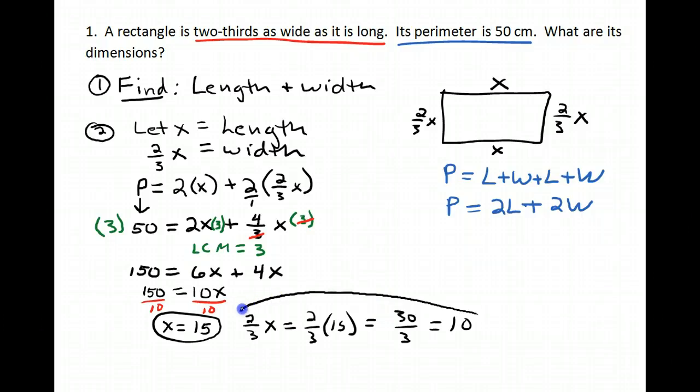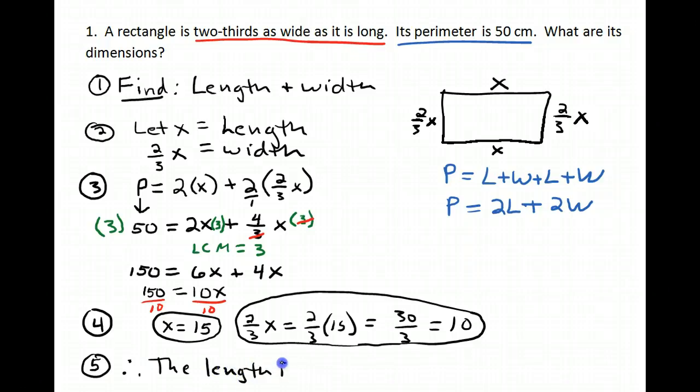So this actually can all be circled. That's part of my step four. So I put my little four over here. We should put our step three here. And then we will write our conclusion. Therefore, the length is 15 centimeters, and the width is 10 centimeters.